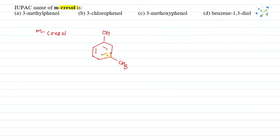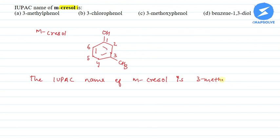This is the m-cresol structure with OH and CH3 groups. Now numbering the carbon positions 1, 2, 3, 4, 5, and 6. The IUPAC name of m-cresol is 3-methylphenol, because the methyl group is at the 3 position.